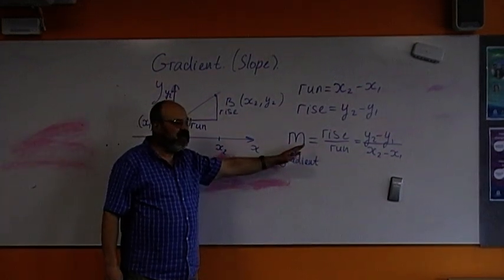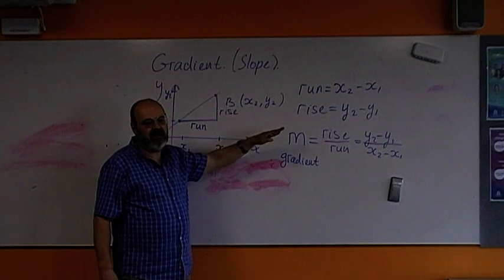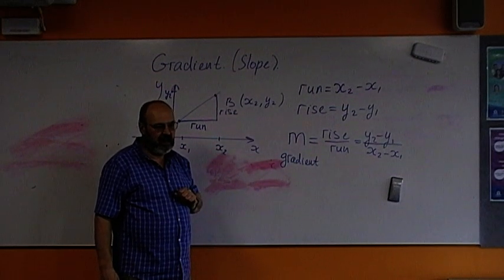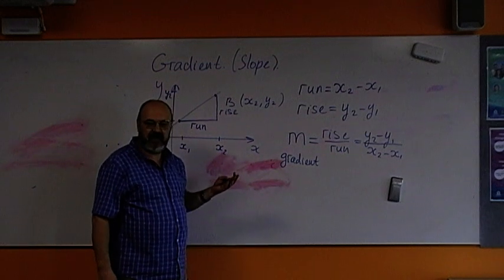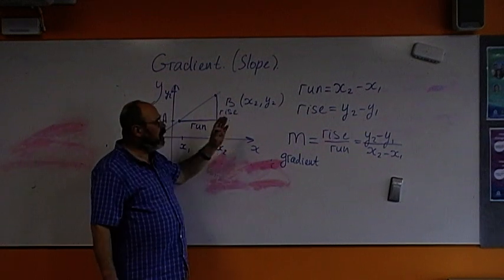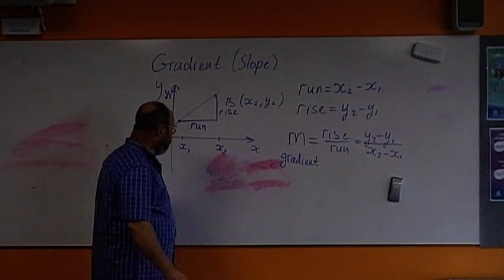The bigger the gradient, the steeper will be the line. The less gradient, the less steep the line. Also, as we will see, gradient can be not always positive. It can be negative. If line instead of going up, it will go down. So, let's consider some examples.